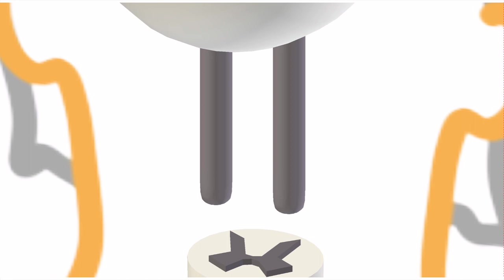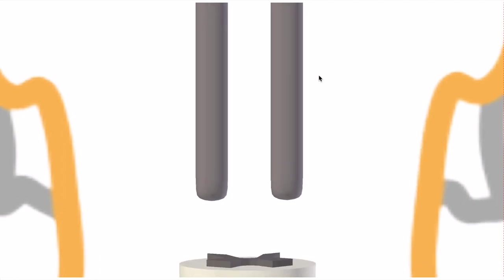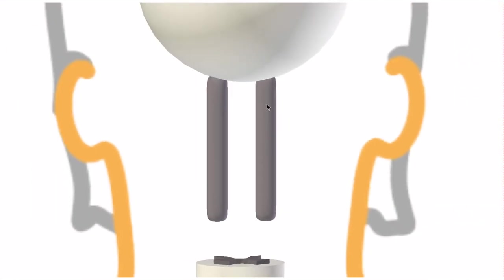The reticulospinal tract is up next, for which we will bring in the reticular formation. The reticular formation is composed of many nuclei and spans the medulla to the midbrain. So with their cell bodies in here, our axons then descend in the collection known as the reticulospinal tract.